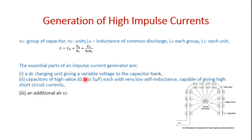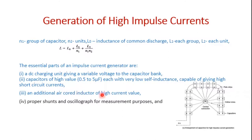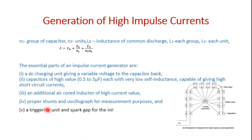An additional air-core inductor of high current values is required, and there must be proper shunts with low resistance for measurement purposes, since these operate across a potential difference from the high voltage to the low voltage end. A triggering unit and spark gap for initiation of the current generator are also essential parts.